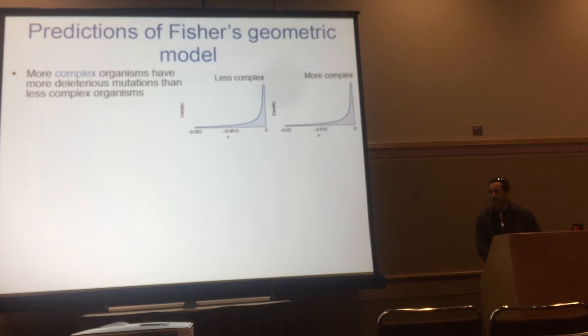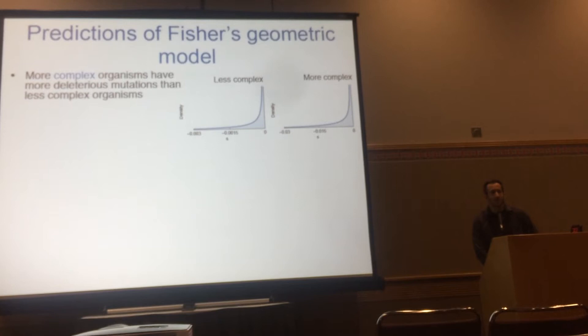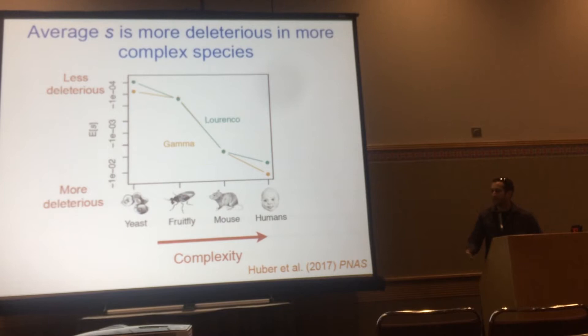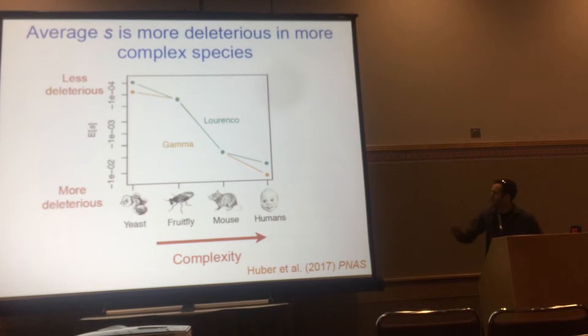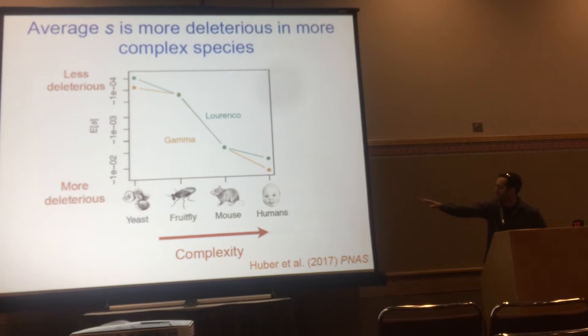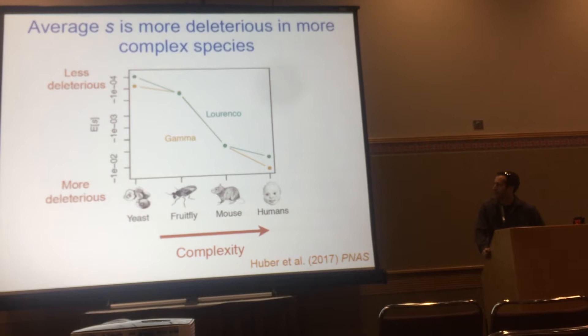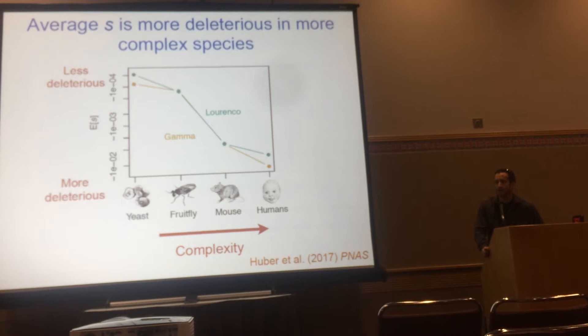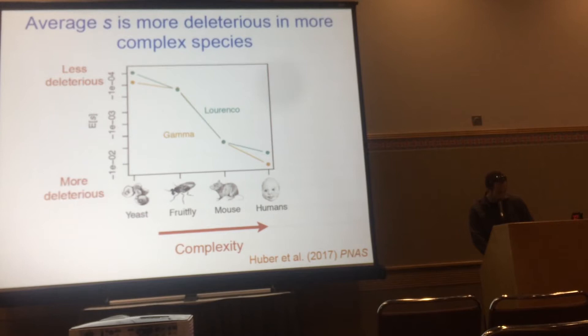Fisher's geometric model predicts that more complex organisms ought to have more deleterious mutations than less complex organisms. We had some evidence from the human-Drosophila comparison, but we wanted to expand to other species. We applied our inference framework to natural populations of yeast and mice as well. The average selection coefficient clearly becomes more deleterious as we move from yeast to humans — and this holds whether we assume a gamma distribution of fitness effects or fit the full Fisher's geometric model from theory derived by Lourenço et al.